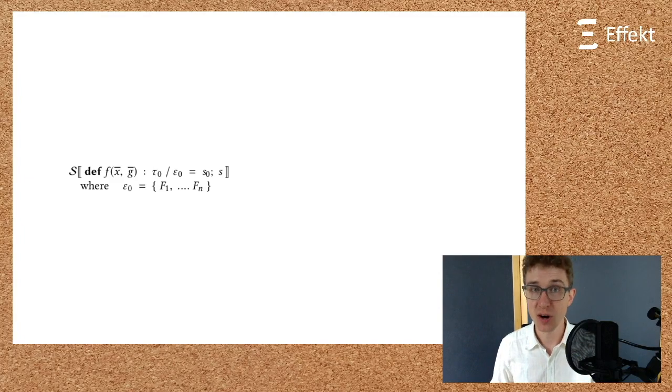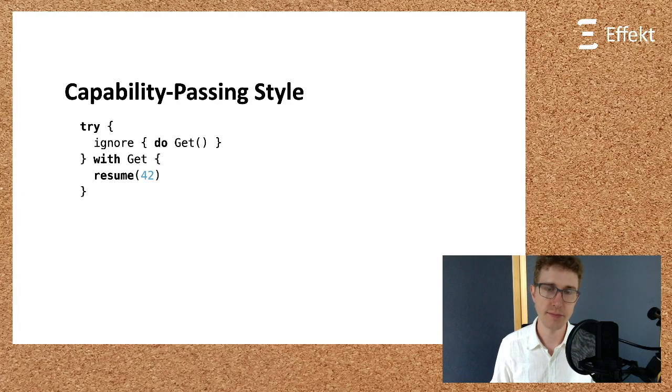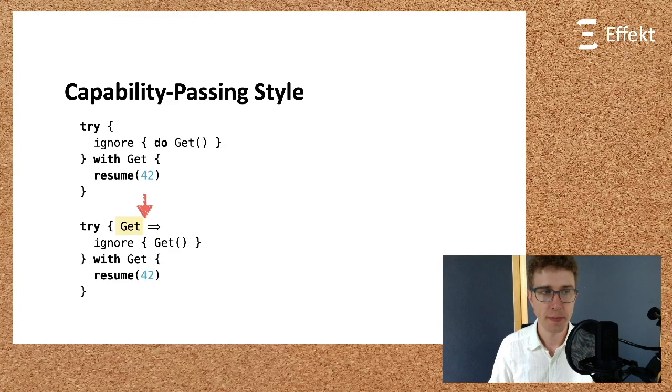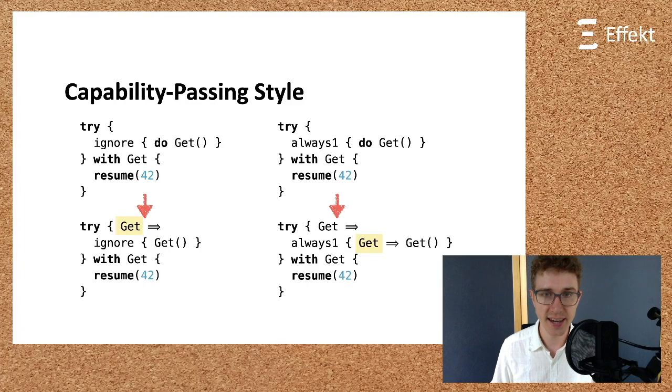In particular, for every effect in the set of effects, f_1 to f_n, we introduce an additional term-level argument. If we translate our program using the handler ignore, we obtain the following. The block passed to ignore lexically closes over the get capability introduced by the surrounding handler. In contrast, if we translate our program using always_one, we introduce another binding occurrence of the capability get, which shadows the outer one. Our runtime follows a generative semantics and thus prevents accidental capture.